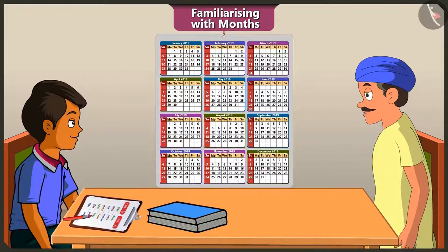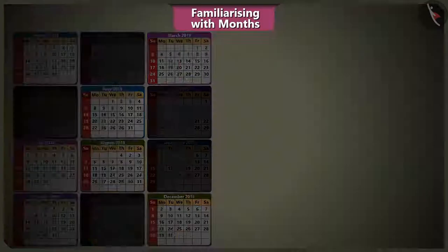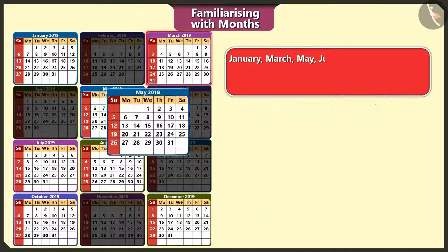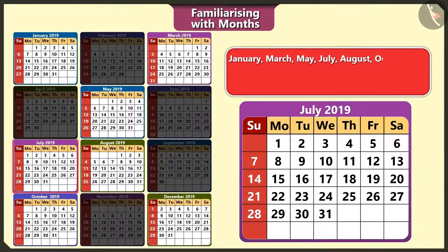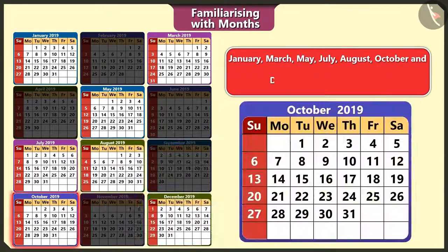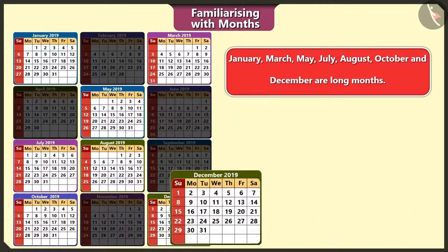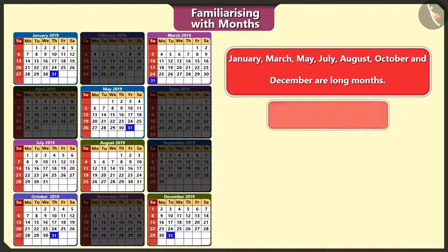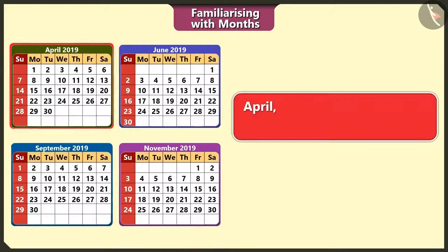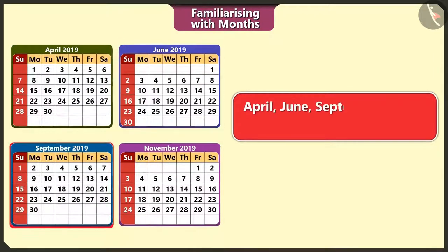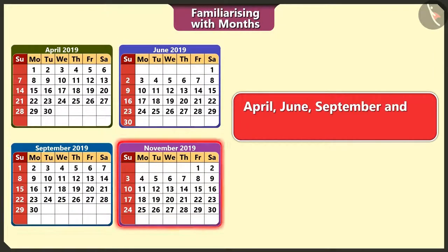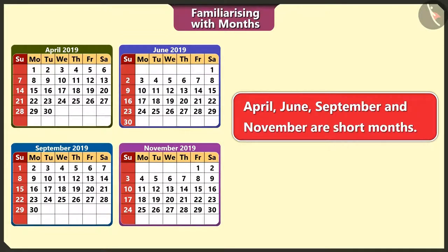Uncle, how many days are there in each month? The number of days in each month varies. January, March, May, July, August, October, and December are the long months — there are 31 days in these months. April, June, September, and November are the short months — there are 30 days in these months.